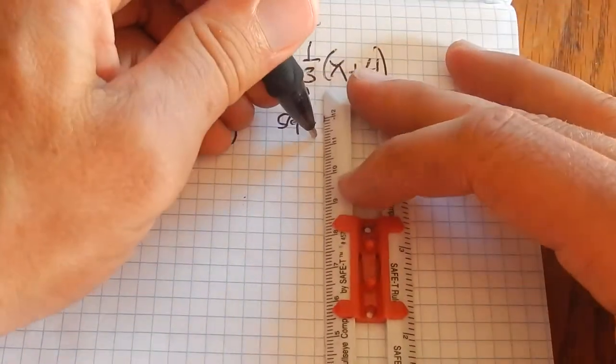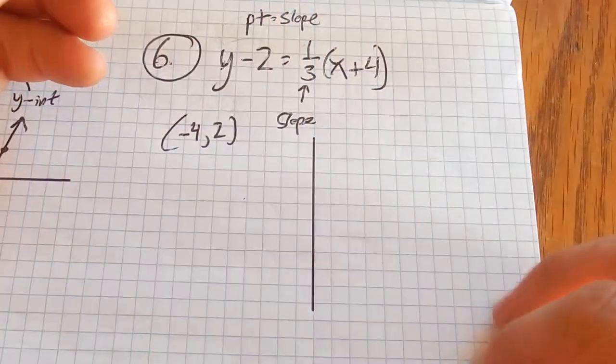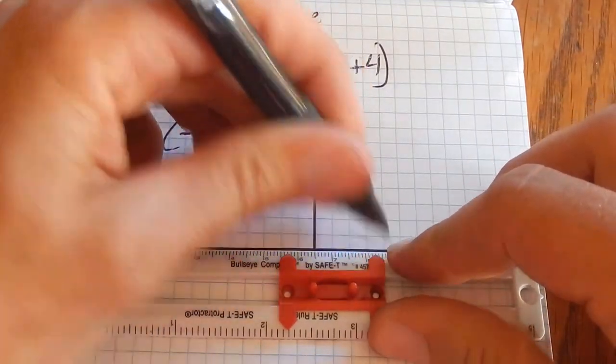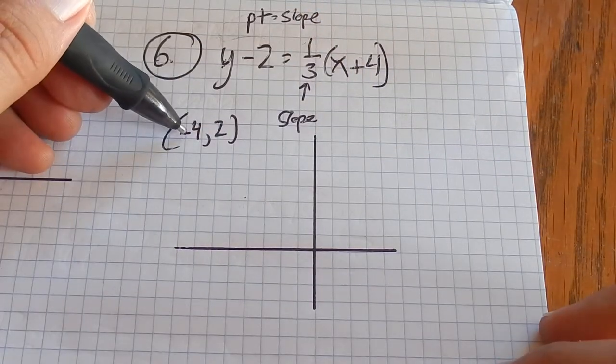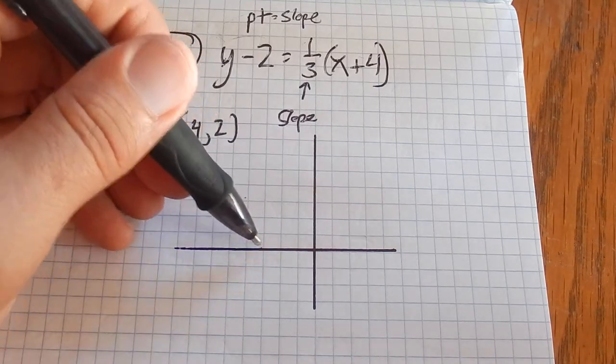So what I have now is a point and the slope. So I have enough information. I know a place to start, negative 4, 2. So back 4, up 2.